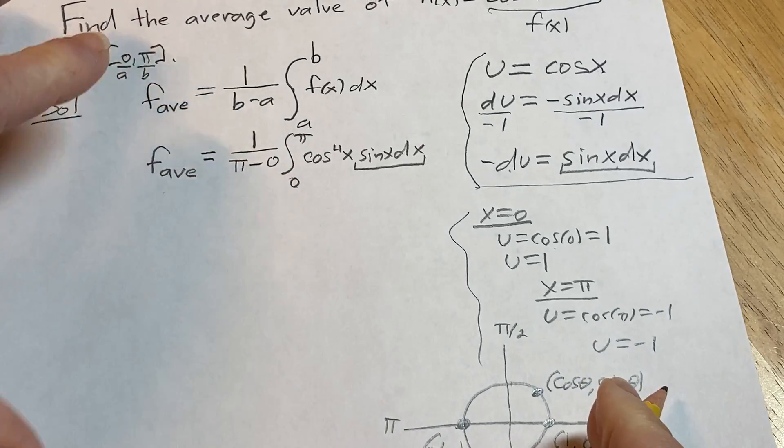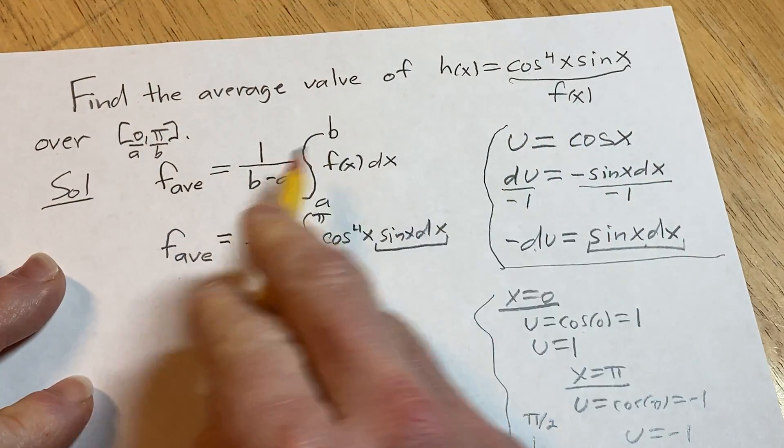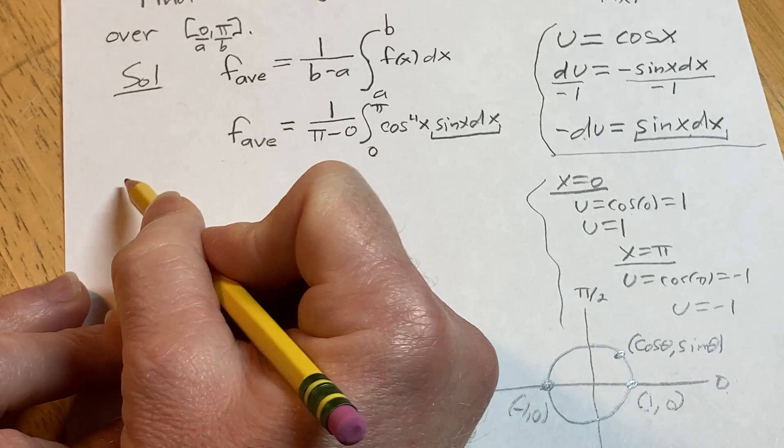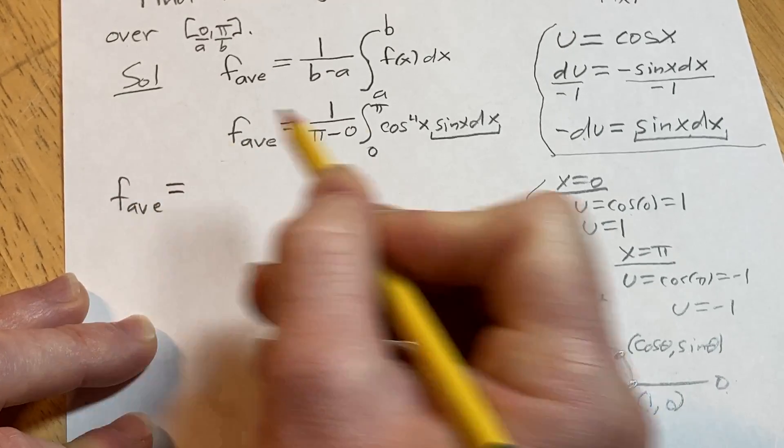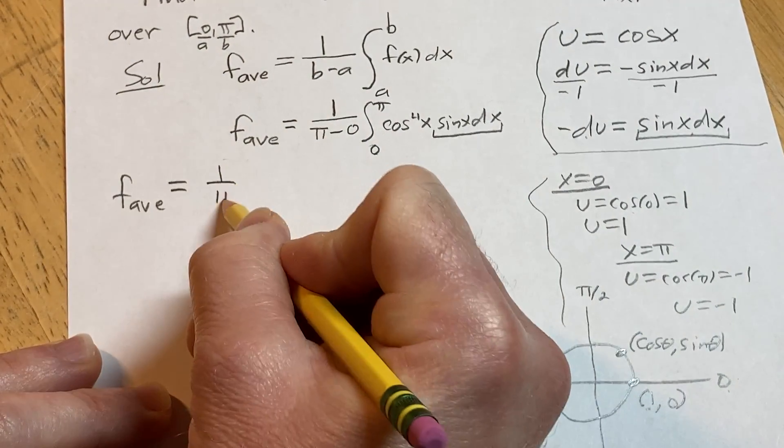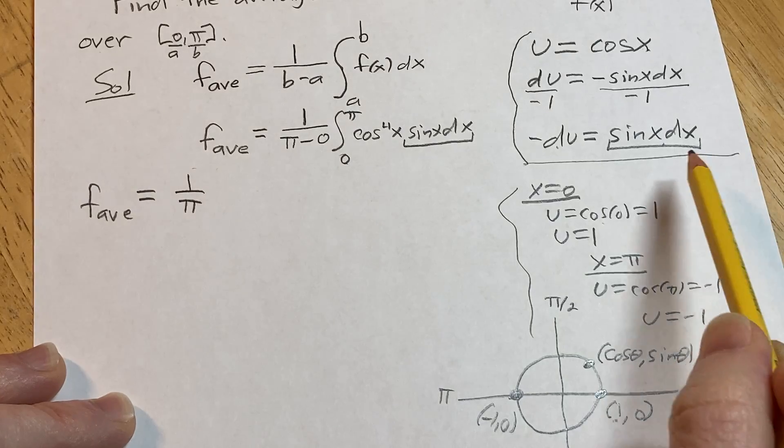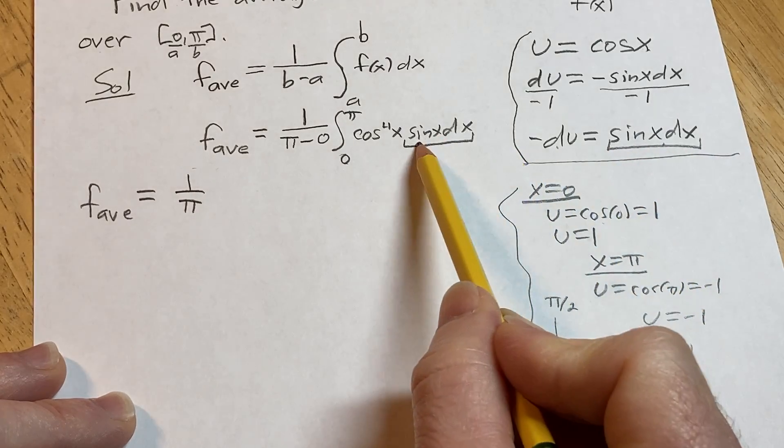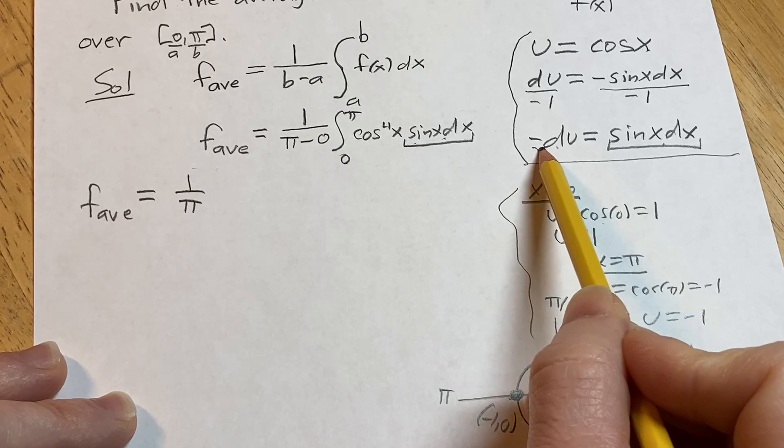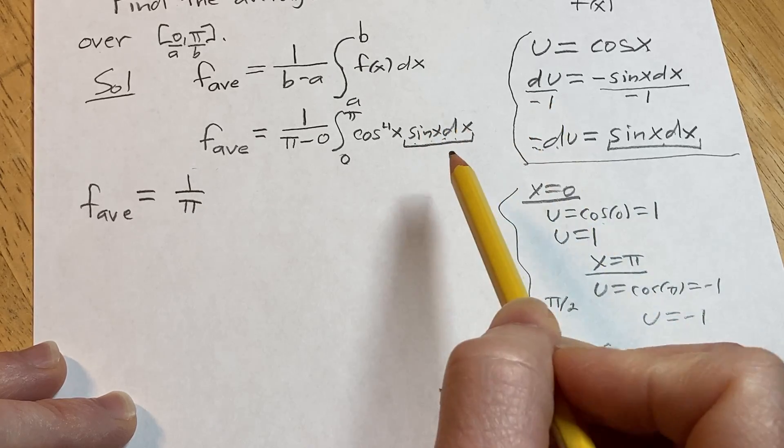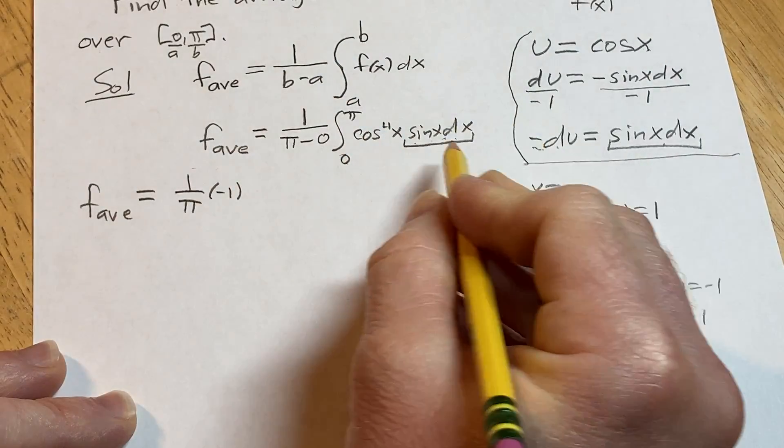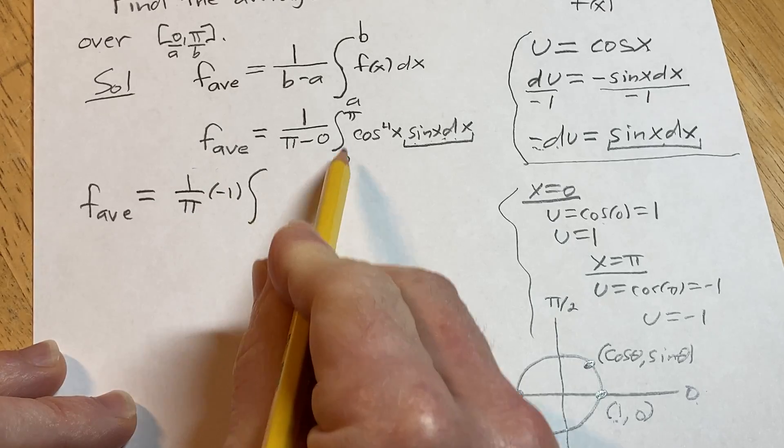Okay, let's go back to our problem, which is computing the average value of this function over this interval. So I'm going to go ahead and write down f sub av again, so the average value of the function. So what is this going to be? It's going to be 1 over pi. And then let's think about what's happening here. So here we have sine x dx, and then here we have negative du. So what we're going to do here is we're going to replace sine x dx with negative du. So I'm just going to put the negative here like this, just like that on the outside. Then we have the definite integral from 0 to pi.